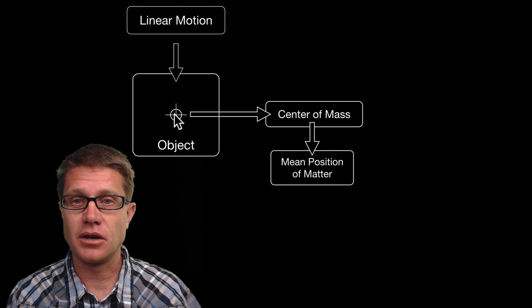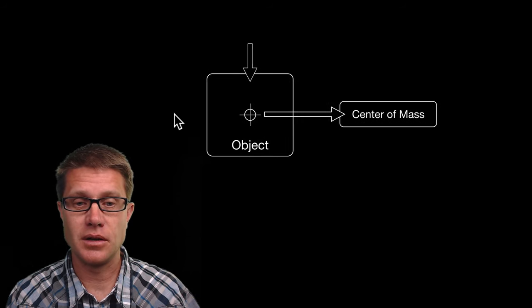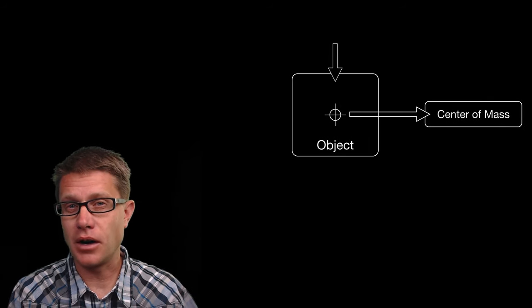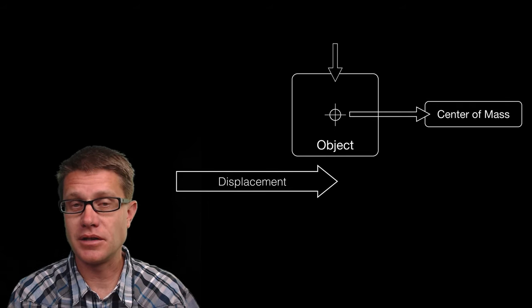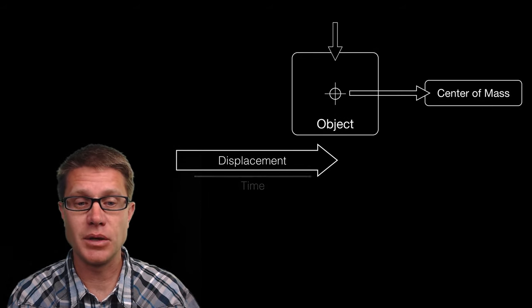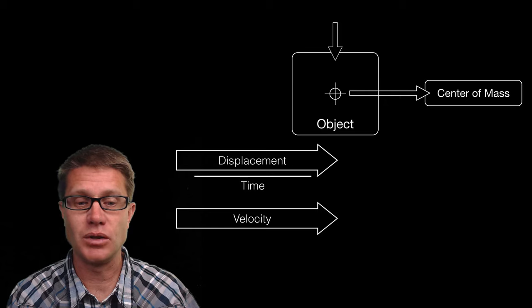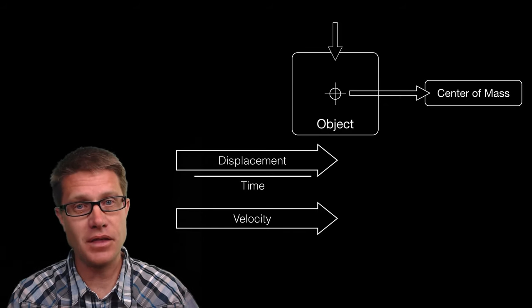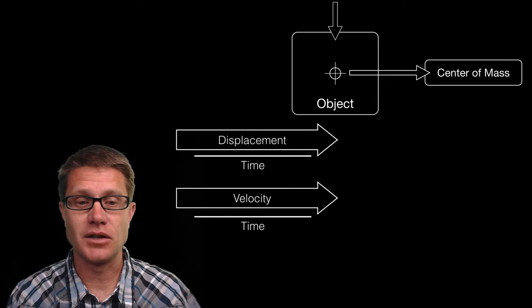If we really want to measure the linear motion of this object, what we can do is figure out where that center of mass was at the beginning, where it is at the end, and that would give us its displacement. If we divide that by time it would give us its velocity. And if we give that over time, that is going to give us our acceleration.